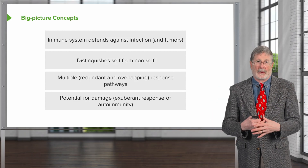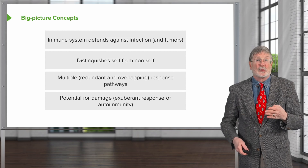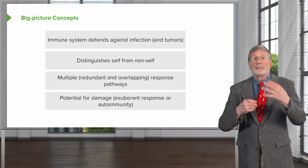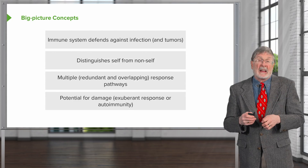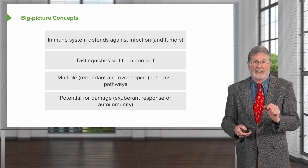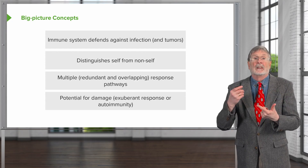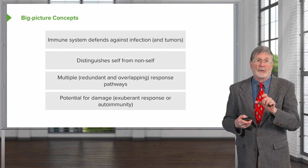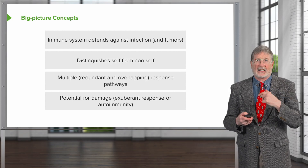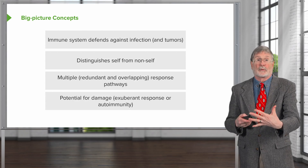There's a potential, however, for a lot of damage — you can have too exuberant a response. You can just have too many neutrophils, too many macrophages making too many mediators and cause damage in that way. You can also have autoimmunity — a response to self. That happens because we just don't eliminate those self-reactive clones.